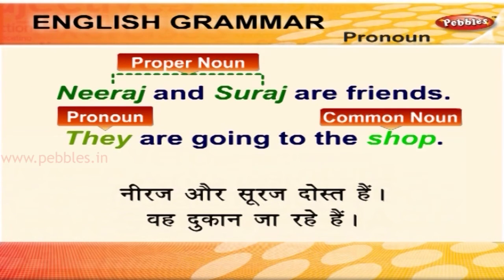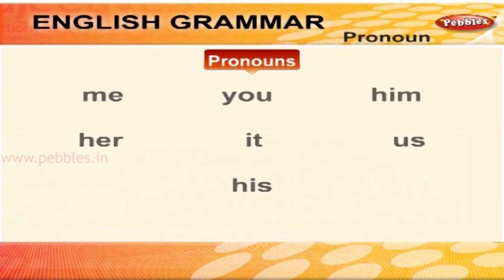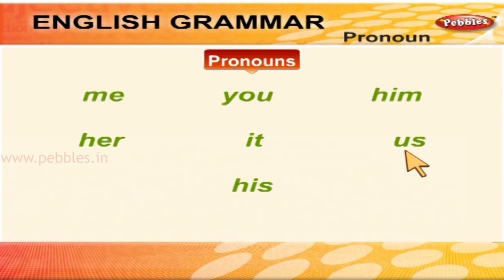कुछ और प्रकार के pronoun देखते हैं। Some pronouns usually come after the verb in the sentence. कुछ pronoun वाक्य में क्रिया के बाद आते हैं: me, you, him, her, it, us, his.